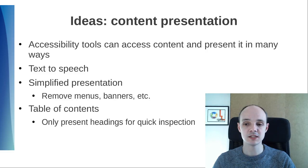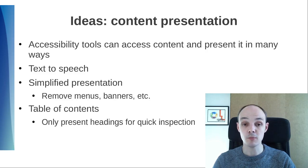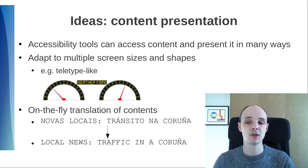Accessibility tools can provide a simplified presentation of the content, removing banners, menus, etc., and providing content in the least distracting way possible. A special case of simplified presentation can be the creation of a table of contents, presenting only headings for quick inspection, so you can skim through a big piece of content and extract what you need more quickly. Combining this with text-to-speech would be very useful. We could adapt content to multiple screen sizes and shapes, in addition to providing a simplified presentation. We could make it fit in a container that content was never intended to — for example, a teletype-like screen on the cockpit.